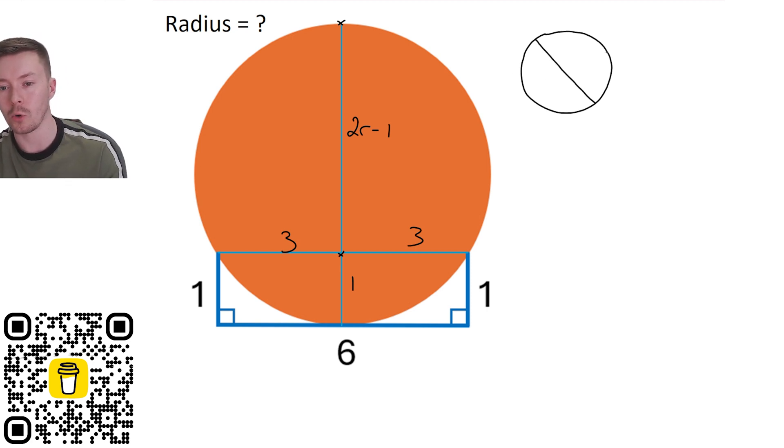if we've got two chords that intersect, let's call each of these line segments A, that B, let's label them, that X and that Y.